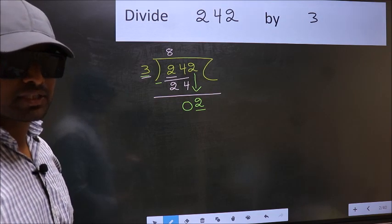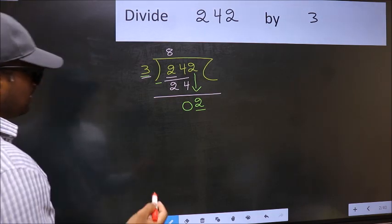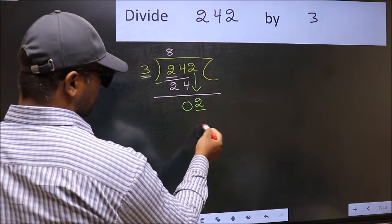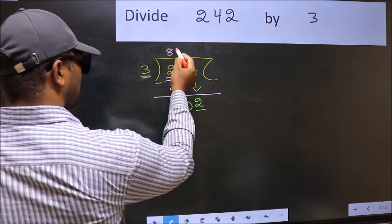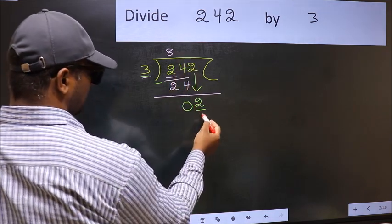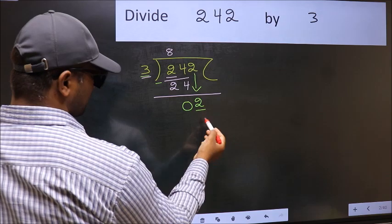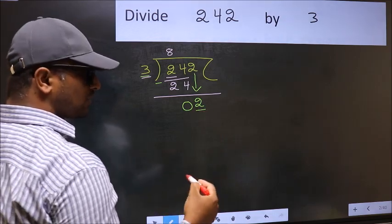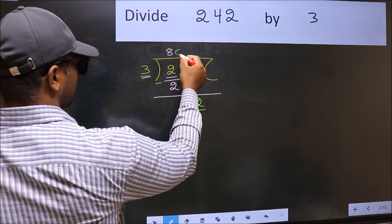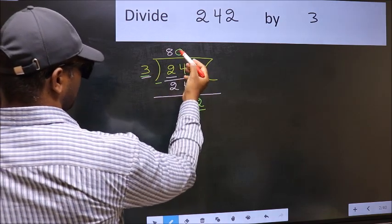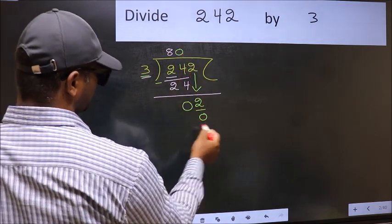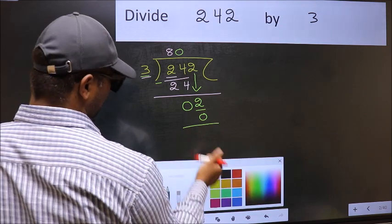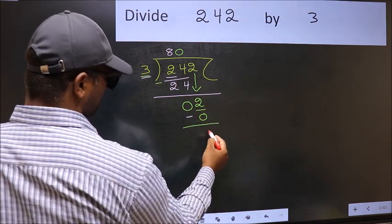Instead, what you should think of is, what number should we write here? If I write 1 here, I will get 3. But 3 is larger than 2. So what we should do is, we should put 0. So 3 into 0 is 0. Now you subtract. 2 minus 0, 2.